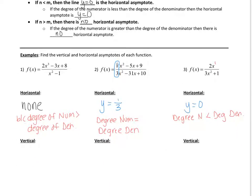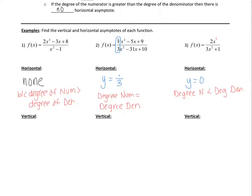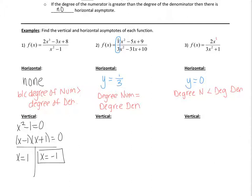Now let's find the vertical asymptotes. A vertical asymptote is found by setting the denominator equal to zero and solving — basically finding the restricted domain. So we set the denominator equal to zero, factor by DOTS, and get x equals 1 and x equals negative 1. These are the equations of the vertical asymptotes.